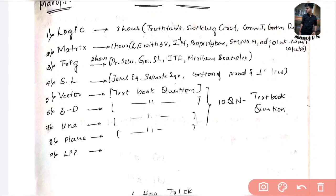The fourth topic is straight lines. What you need to learn here is joint equations and separate equations, and the connection between parallel and perpendicular lines. These are easy to learn within straight lines.